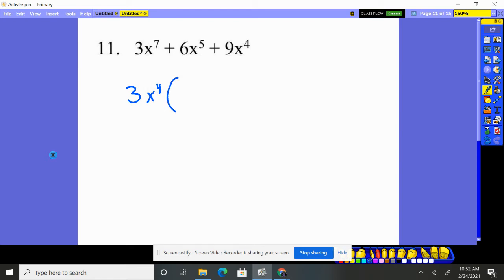So let's see what's left behind. We had three X to the seven. We factored out a three X to the fourth. That means an X to the third is left behind.